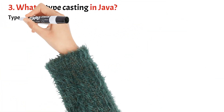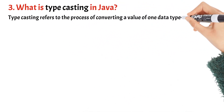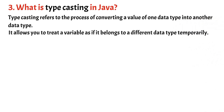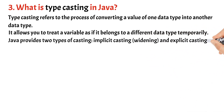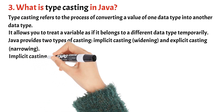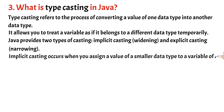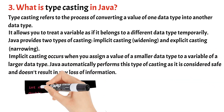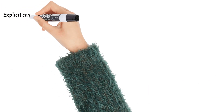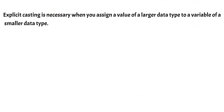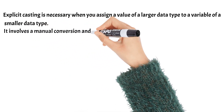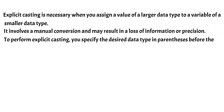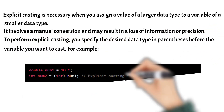What is typecasting in Java? Typecasting in Java refers to the process of converting a value of one data type into another data type. It allows you to treat a variable as if it belongs to a different data type temporarily. Java provides two types of casting: implicit casting (widening) and explicit casting (narrowing). Implicit casting occurs when you assign a value of a smaller data type to a variable of a larger data type. Java automatically performs this type of casting as it is considered safe and doesn't result in any loss of information. Explicit casting is necessary when you assign a value of a larger data type to a variable of a smaller data type. It involves a manual conversion and may result in a loss of information or precision. To perform explicit casting, you specify the desired data type in parentheses before the variable you want to cast.